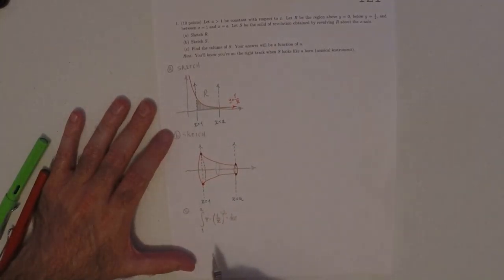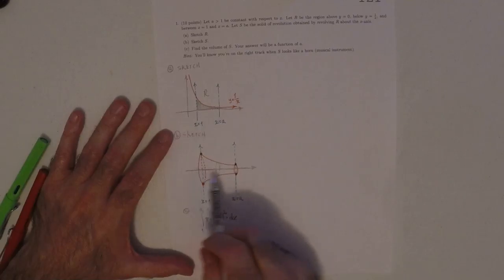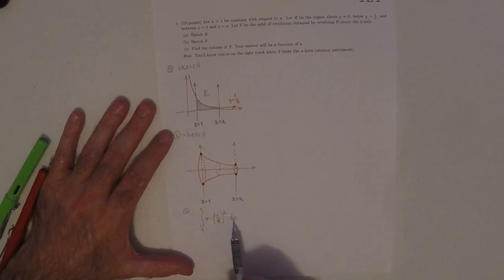Because remember, the way this formula works, it's viewing this solid as a collection of cylinders. So it looks like pi r squared h.